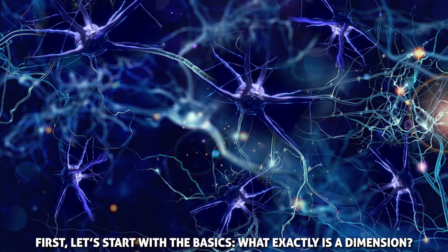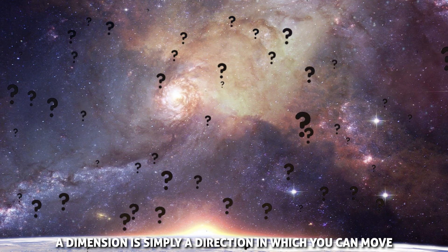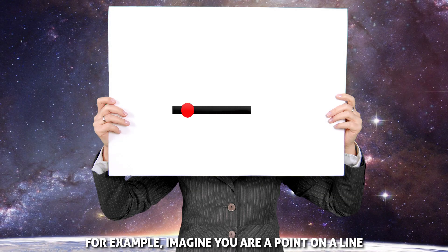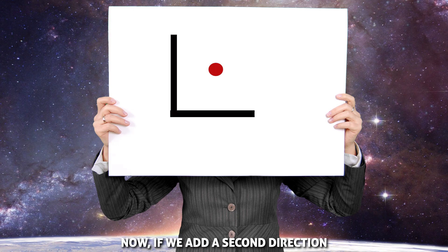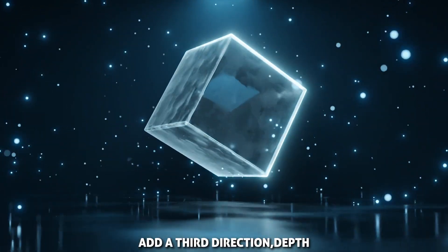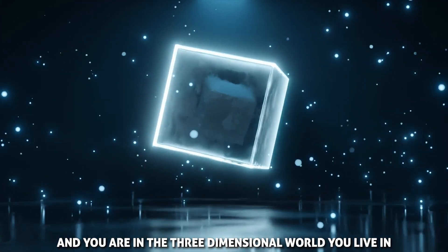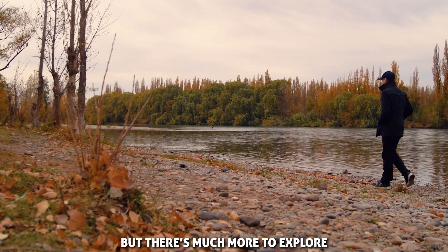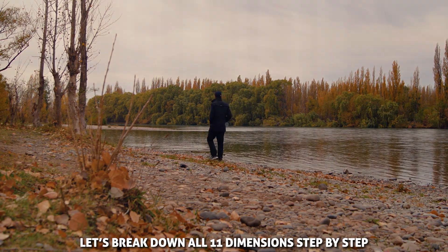First, let's start with the basics. What exactly is a dimension? A dimension is simply a direction in which you can move. For example, imagine you are a point on a line. This is the first dimension. Now, if we add a second direction, you're on a plane, like a piece of paper. Add a third direction, depth, and you are in the three-dimensional world you live in. These first three dimensions are the ones we experience daily, but there's much more to explore. Let's break down all 11 dimensions step by step.